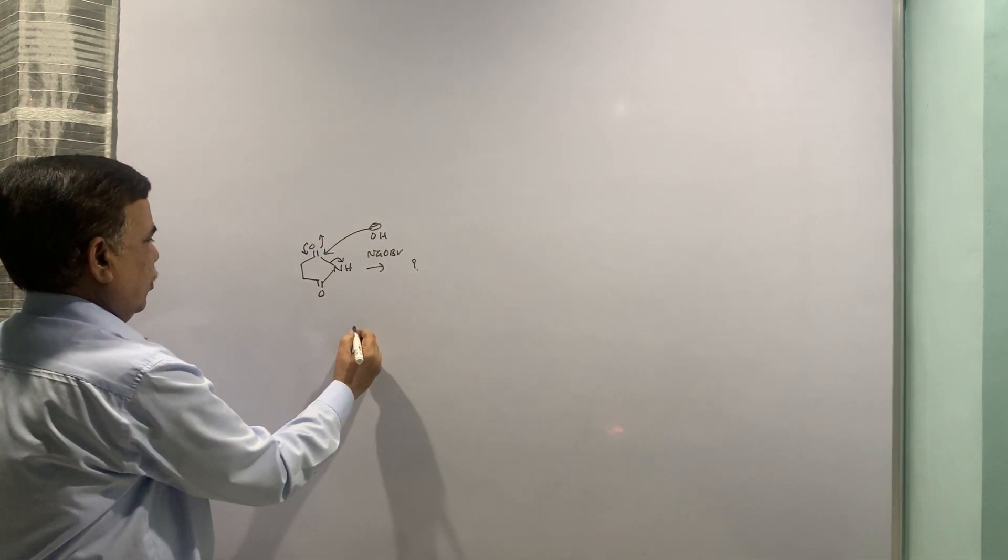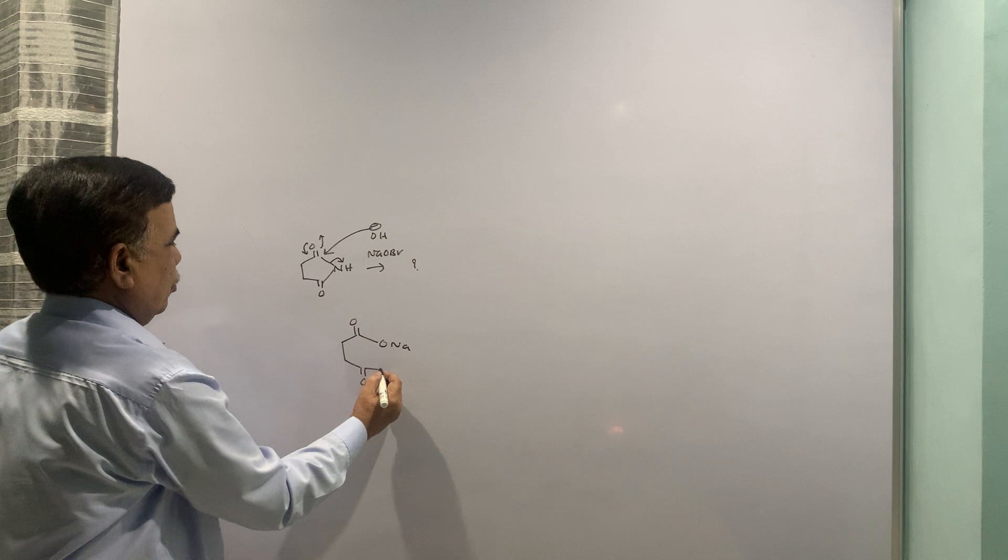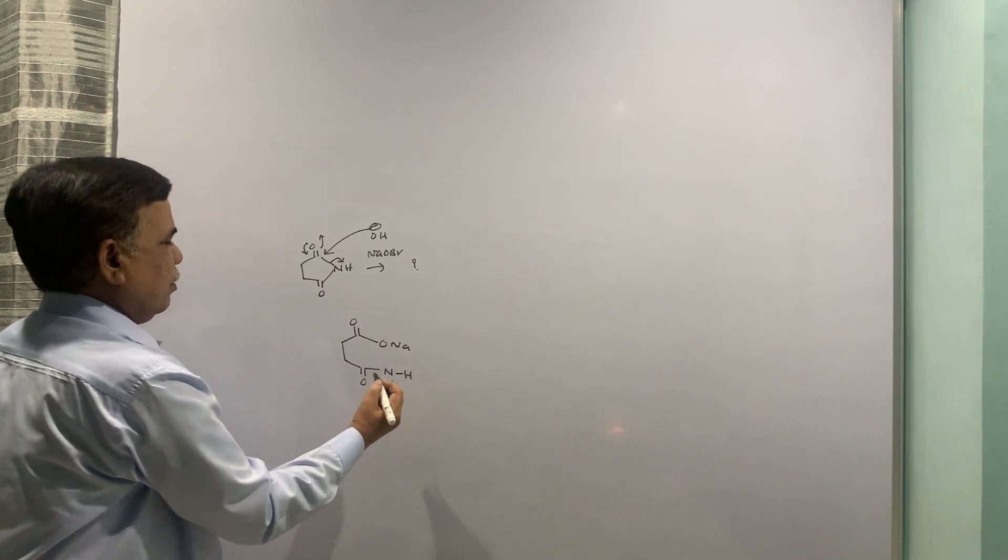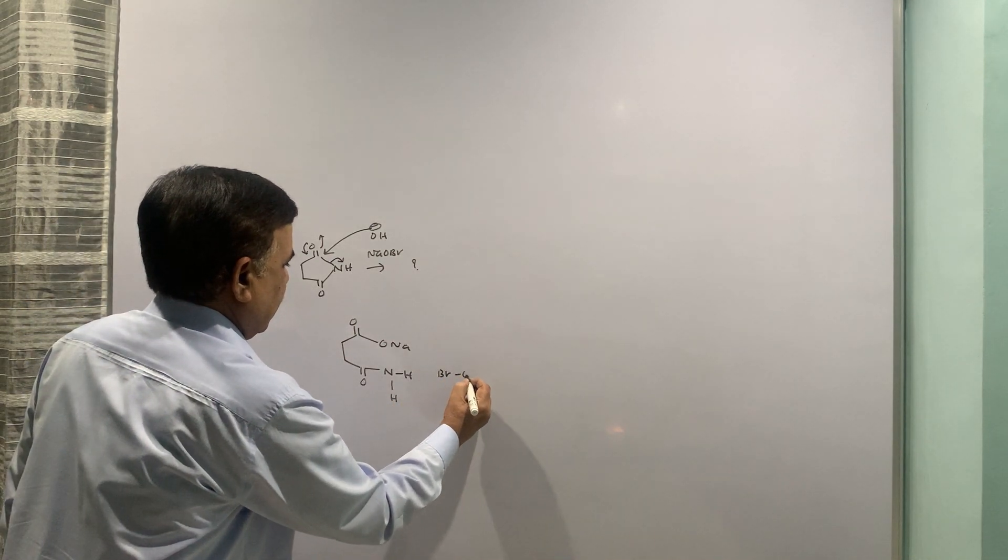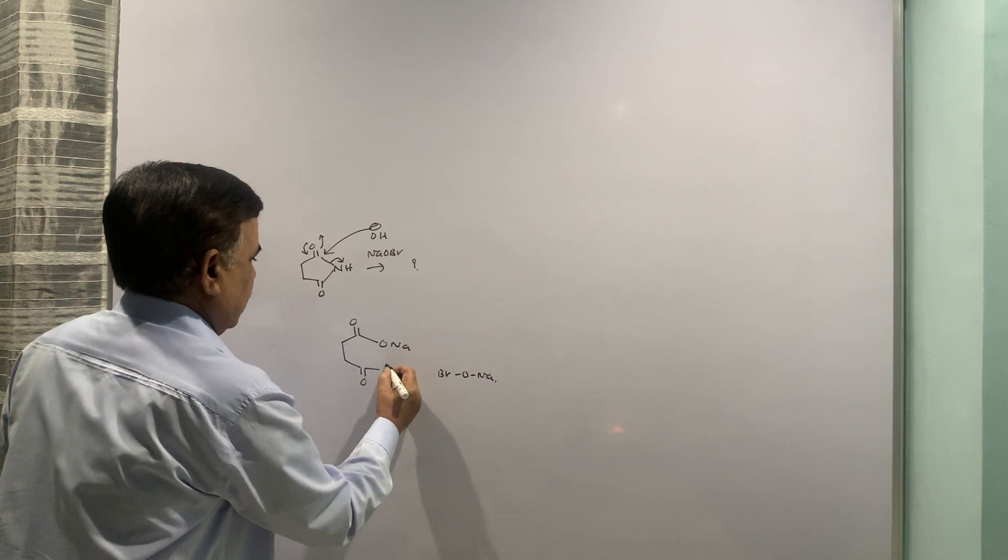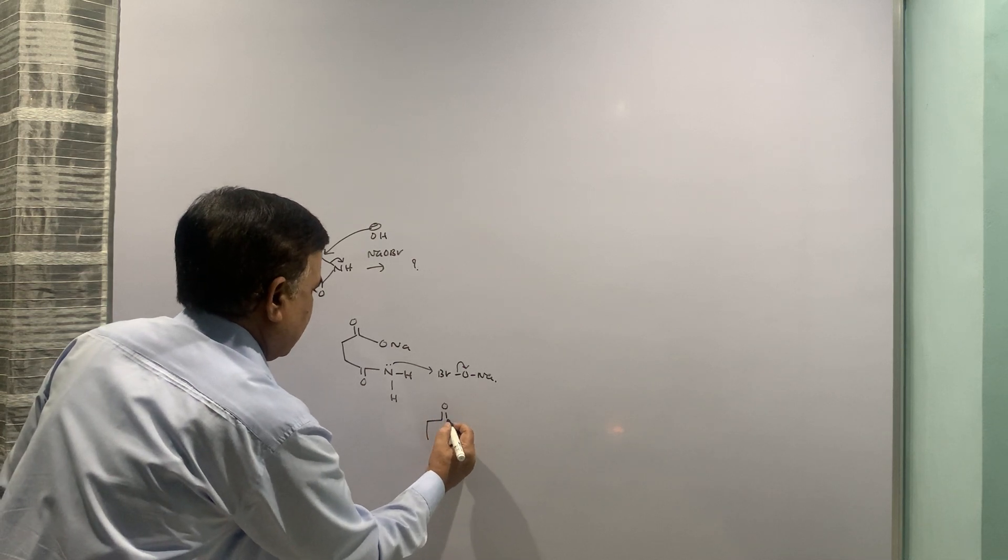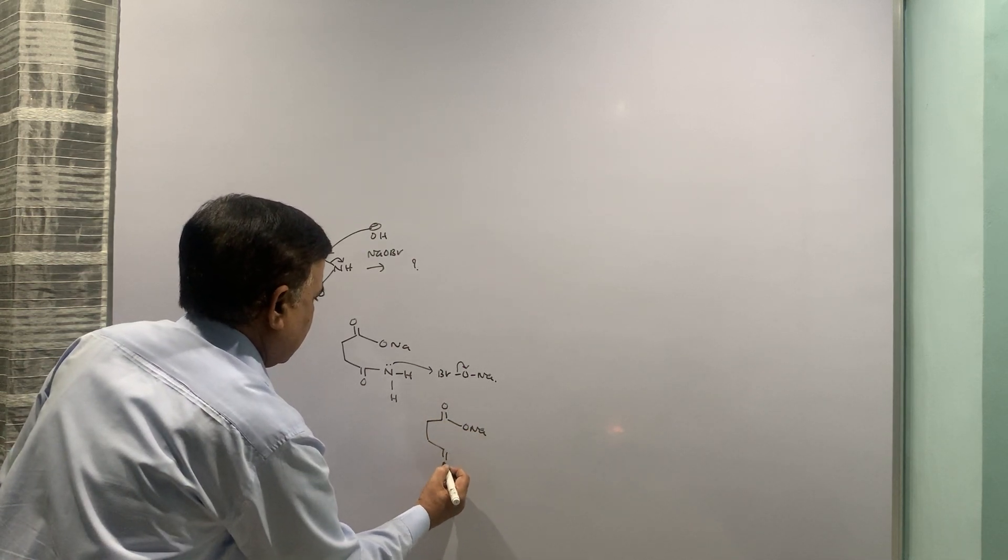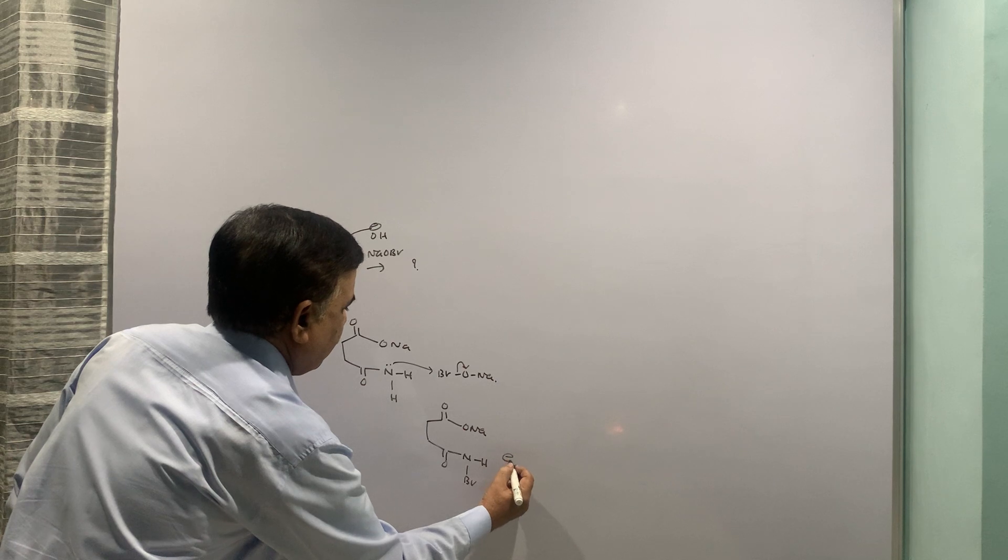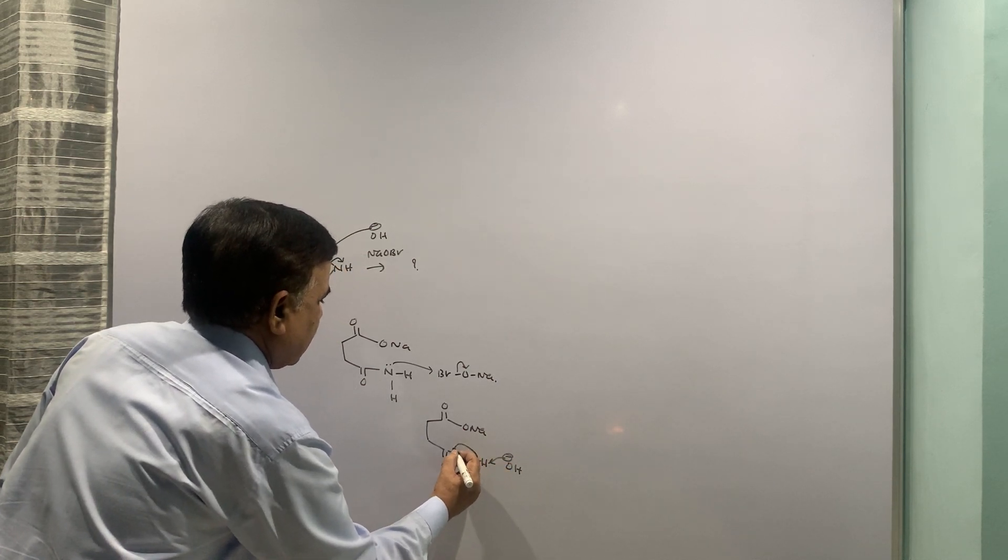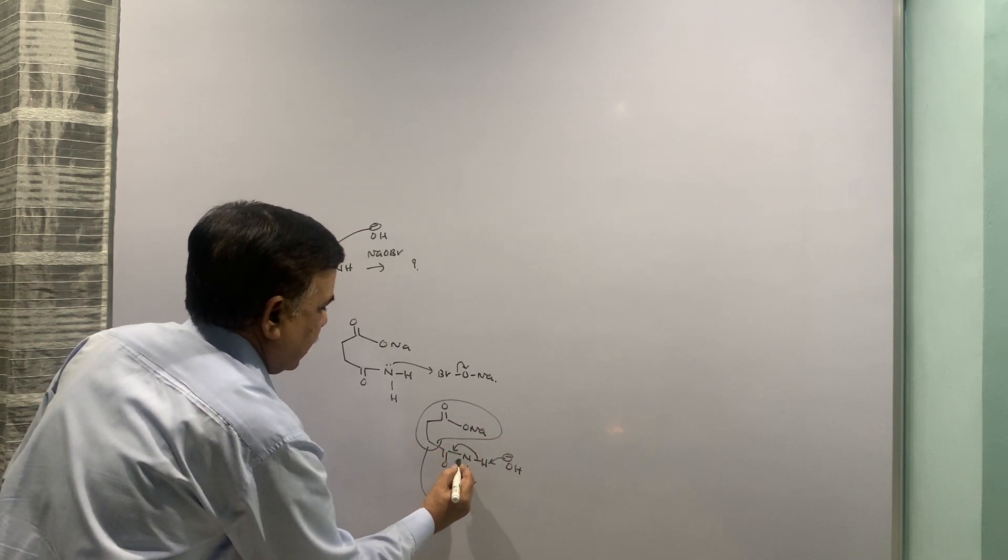Once you have primary amide, this primary amide can react with NaOBr. We have already shown that. This nitrogen can attack here. This goes off. And eventually you have got NHBr. This is being attacked by OH. This comes here. This entire group migrates here and Br goes off.